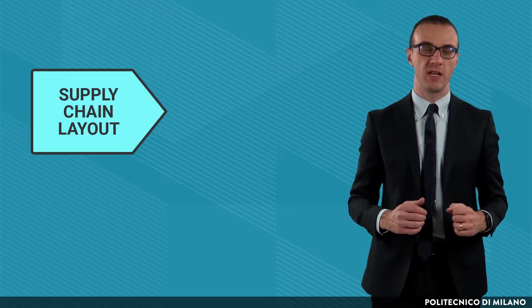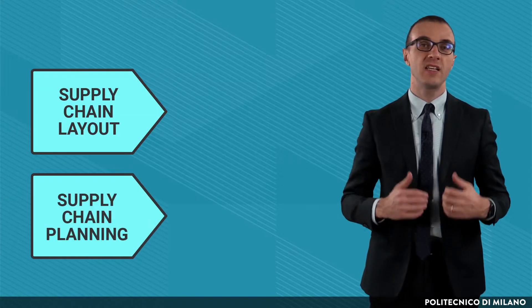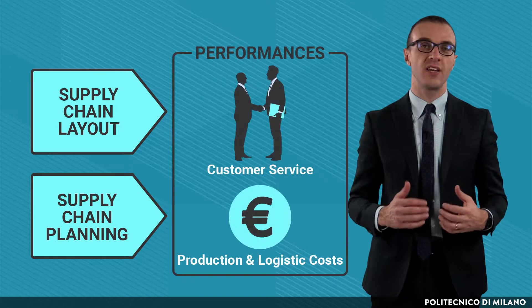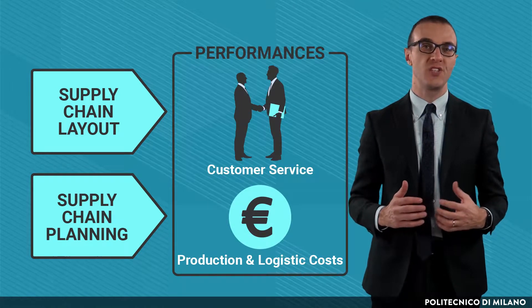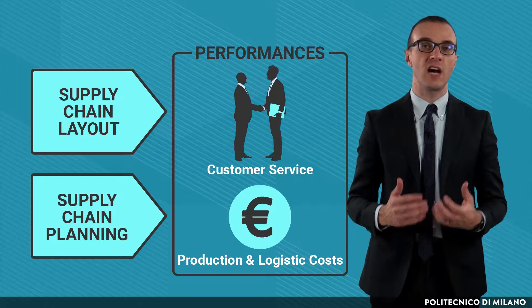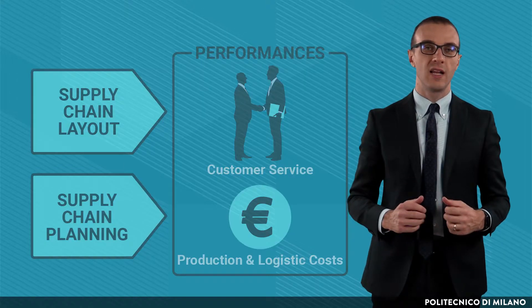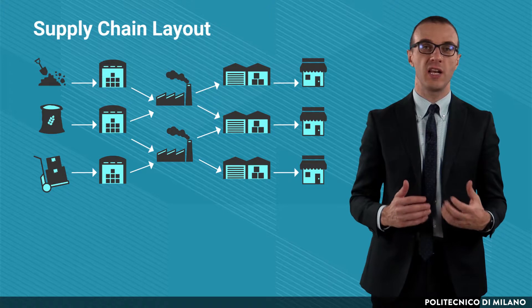In this course, we will focus on the main concepts of operations management. In particular, we will tackle three main topics: the layout of the supply chain, the planning of the supply chain, and the internal and external performances, which, as you can see from the picture, can be considered as the output of the first two ones. Let's start focusing on the supply chain layout.